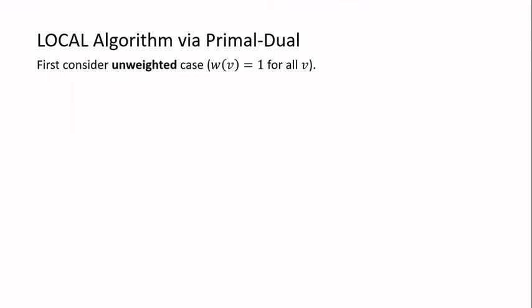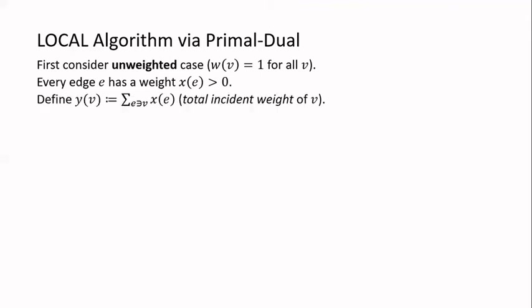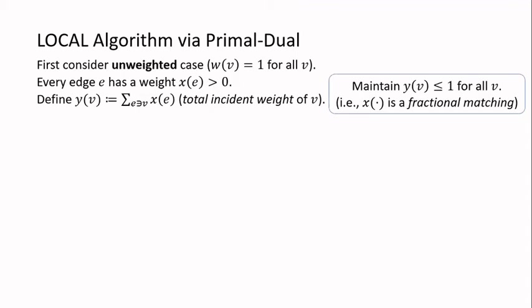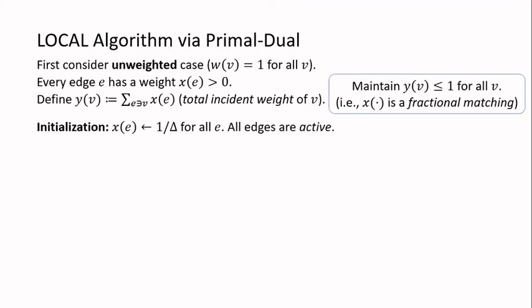First, let's look at a local algorithm for unweighted vertex cover using the standard primal-dual framework. We associate every edge with a positive weight x(e), and for every vertex v, we define y(v) to be the sum of the weights of its neighboring edges — this is the total incident weight of v. During the algorithm, we maintain that y(v) is at most one, so x is a fractional matching of the graph. At the beginning, we set x(e) to be 1 over delta for all edges e, where delta is the maximum degree, and initially all edges are active.